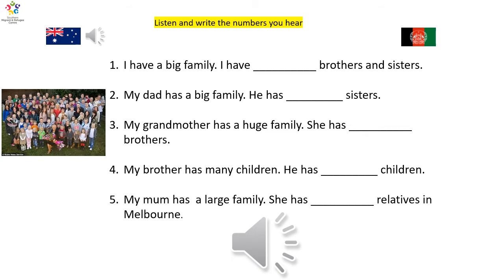Number 1. I have a big family. I have 13 brothers and sisters. Number 2. My dad has a big family. He has 30 sisters.